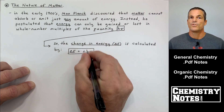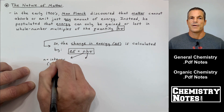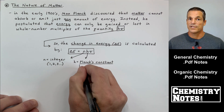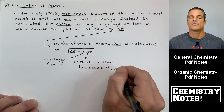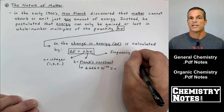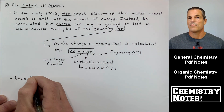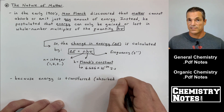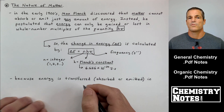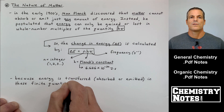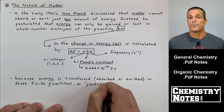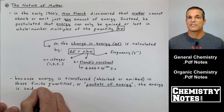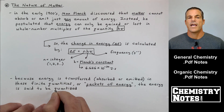So what can we say about hν? The change in energy ΔE is calculated by the equation ΔE = nhν, where n is an integer 1, 2, 3, etc., h is Planck's constant (6.626 × 10⁻³⁴ joule·seconds), and frequency is in units of seconds⁻¹ or hertz, the same as cycles per second. Because energy is absorbed or emitted in these finite quantities or packets of hν, the energy is said to be quantized.